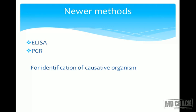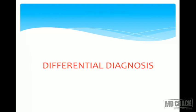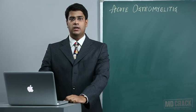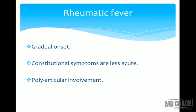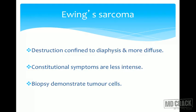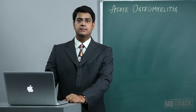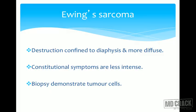Differential diagnosis is important because osteomyelitis can mimic many other diseases. Rheumatic fever has a gradual onset — not sudden and acute like osteomyelitis — with less intense constitutional symptoms and classically polyarticular involvement of multiple joints. Ewing's sarcoma shows destruction confined to the diaphysis and is more diffuse, unlike acute osteomyelitis which affects mainly the metaphyseal region. Constitutional symptoms are much less intense in Ewing's sarcoma, and biopsy demonstrates tumor cells.